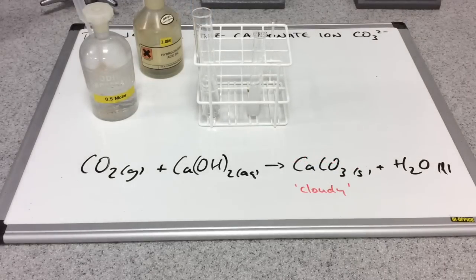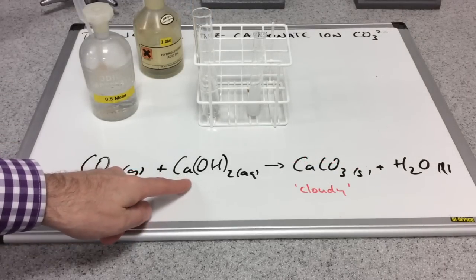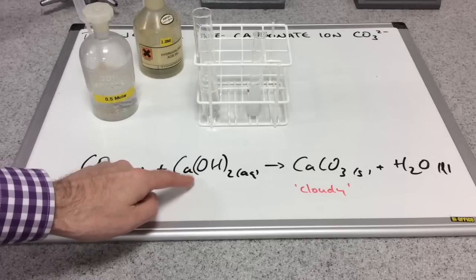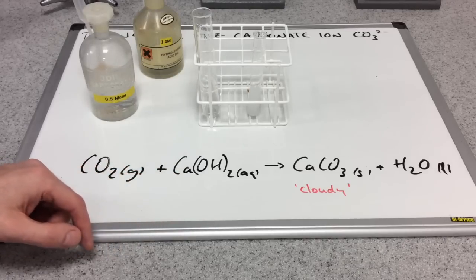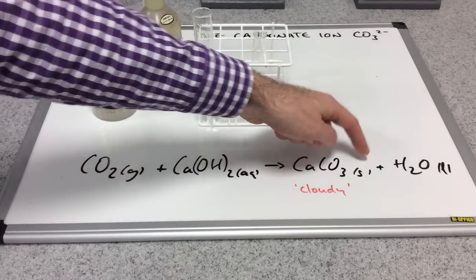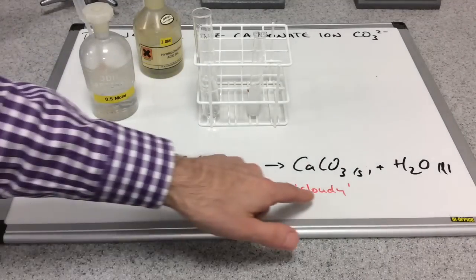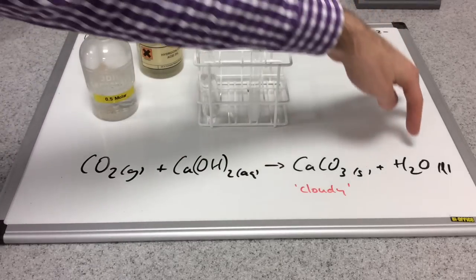There's the chemical equation for the reaction. So the carbon dioxide gas was bubbled through the calcium hydroxide solution, the lime water. It produces an insoluble substance which is calcium carbonate. So you can see there there's a solid state symbol now. That's why this test tube has gone cloudy. And the other product is water.